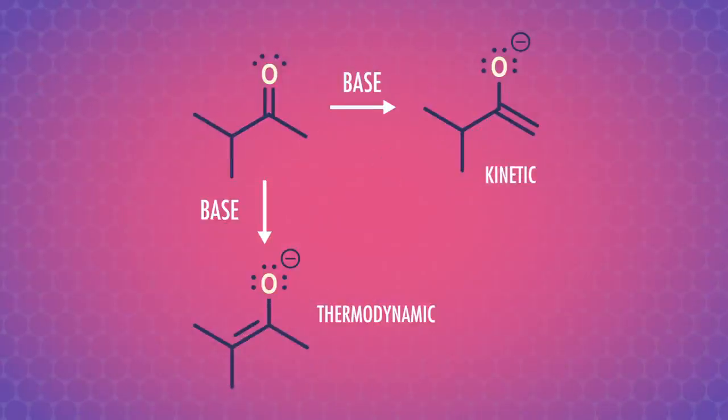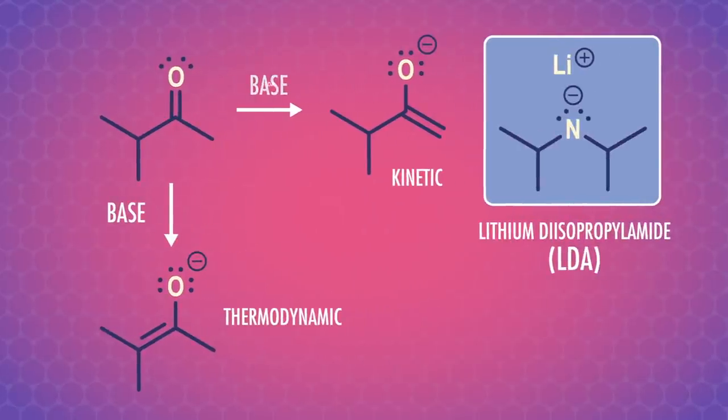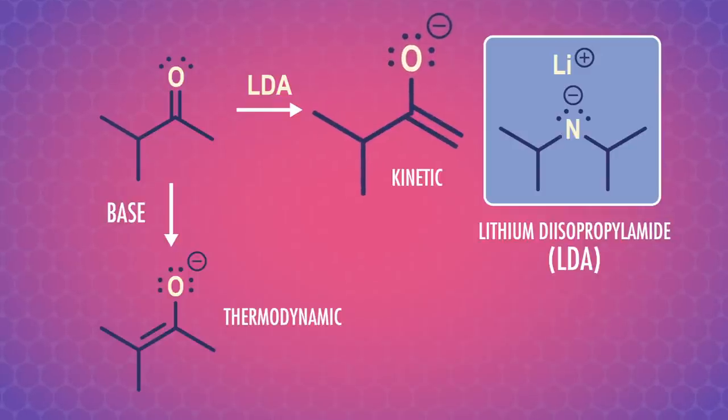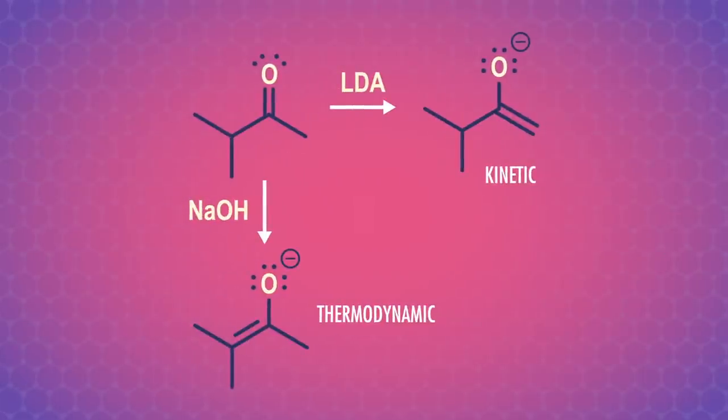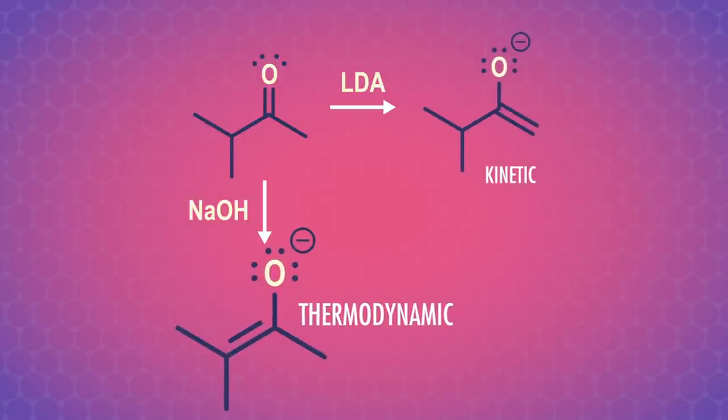We also need to take into account what base we're using to form the enolate. Say we have a bigger, stronger, sterically hindered base, such as lithium diisopropyl amide, or LDA, and the deprotonation step is rapid and irreversible. In this case, the kinetic product will be favored. However, with weaker bases like alkoxides, the pKa of the base and the enolate are close. This means that the enolate can interconvert between the two forms. So over time, the more stable product wins and we end up with more of the thermodynamic product. So to recap, a strong base at low temperature gives us the kinetic enolate. A weaker base at higher temperature gives us the thermodynamic enolate.